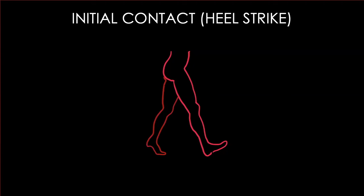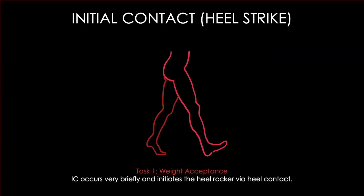Let's start with initial contact, also known as heel strike. In this phase we are starting to contact the ground with our supporting limb. Usually the heel strikes first in a normal gait pattern, and we are initiating something known as the heel rocker — we roll over our heel until our foot is flat.